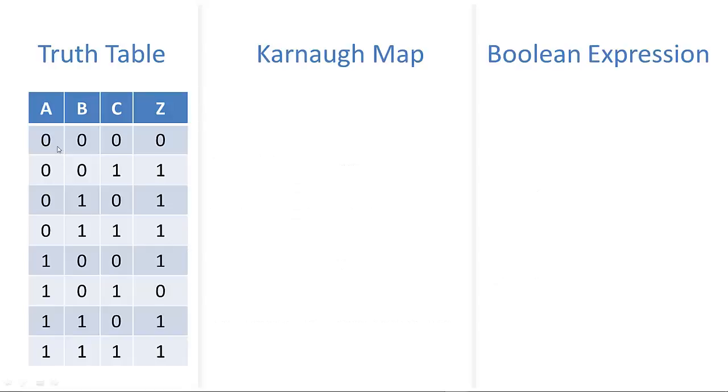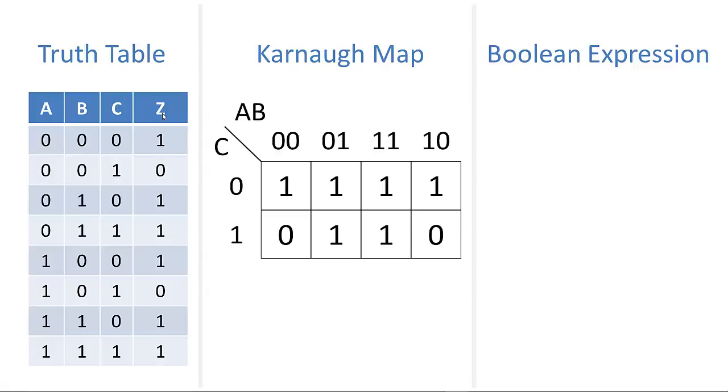Let's look at this one with three input variables, A, B, and C, and one output Z. First, we'll draw the Karnaugh map. We talked about gray code order. We have A and B across the top.